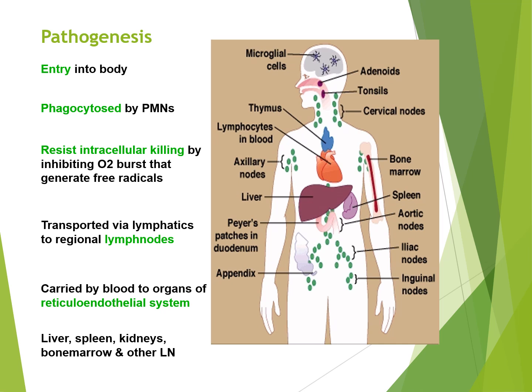How does pathogenesis occur? Brucella enters the body and is phagocytosed by polymorphonuclear leukocytes. It resists intracellular killing by inhibiting the oxygen burst that generates free radicals. It is then transported via lymphatics to regional lymph nodes, carried by the blood to organs of the reticuloendothelial system, and enters the liver, spleen, kidney, bone marrow, and udder.